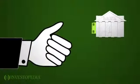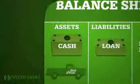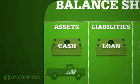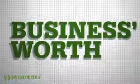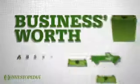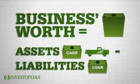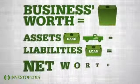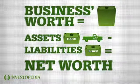Every month, Joe makes a payment against his loan. He reduces his liabilities by the amount of the payment, and his cash is reduced by the same amount. To find out his business's worth, Joe subtracts liabilities from his assets. This equals the net worth of his business.